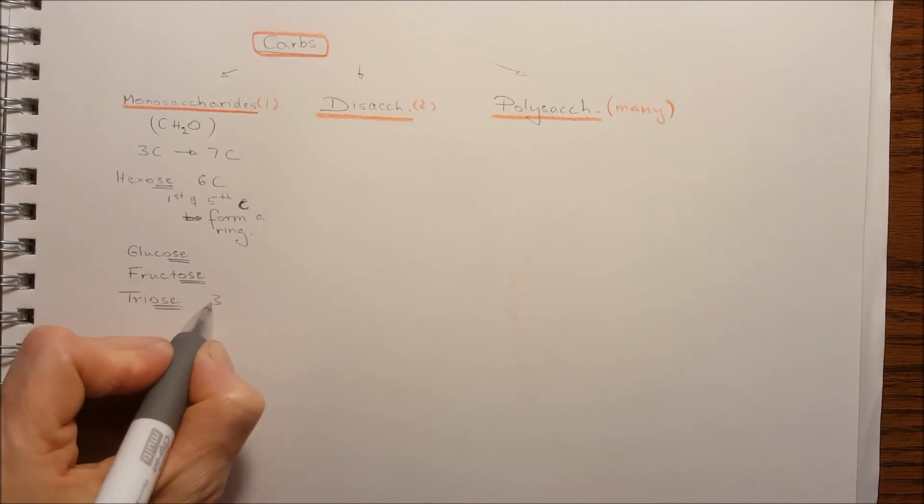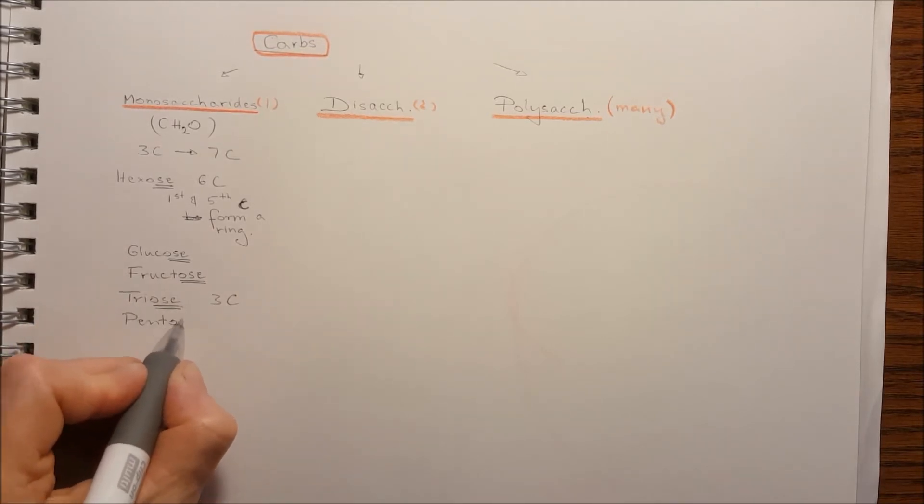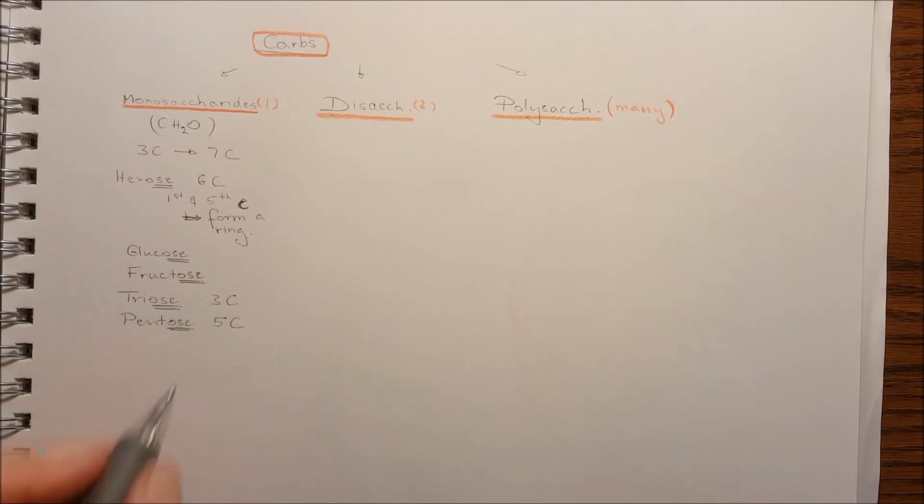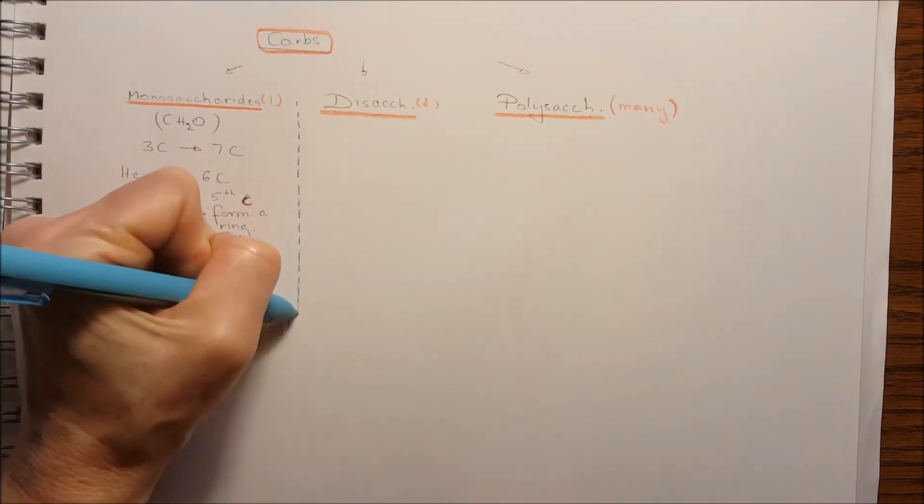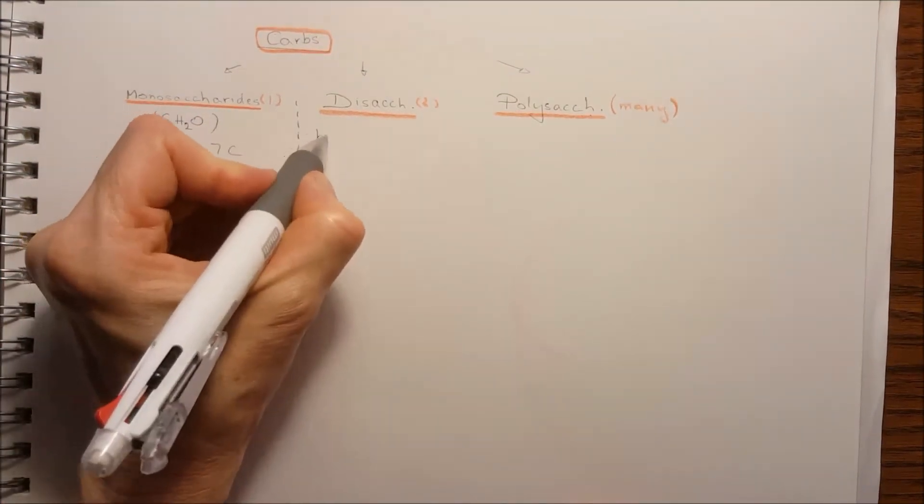And the triose is the three carbon chain monosaccharide or pentose is the five ring. The five ring usually makes, I mean, five carbon usually makes ring forms.